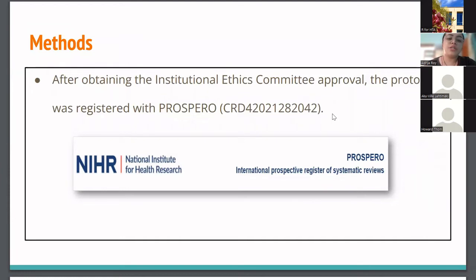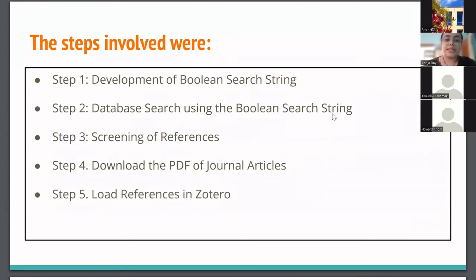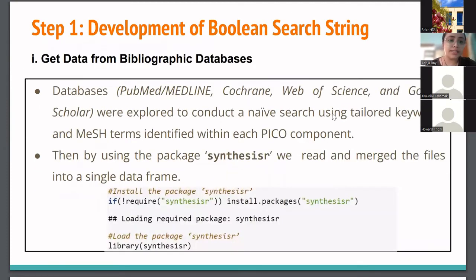We first obtained institute ethics committee approval and the protocol was registered with PROSPERO. The steps involved in creating this reproducible algorithm were broadly: first, develop a boolean search string; second, do a database search using the developed boolean search string; third, screening of the references; fourth, download the PDFs of the articles; and fifth, load the references in Zotero and manage them.